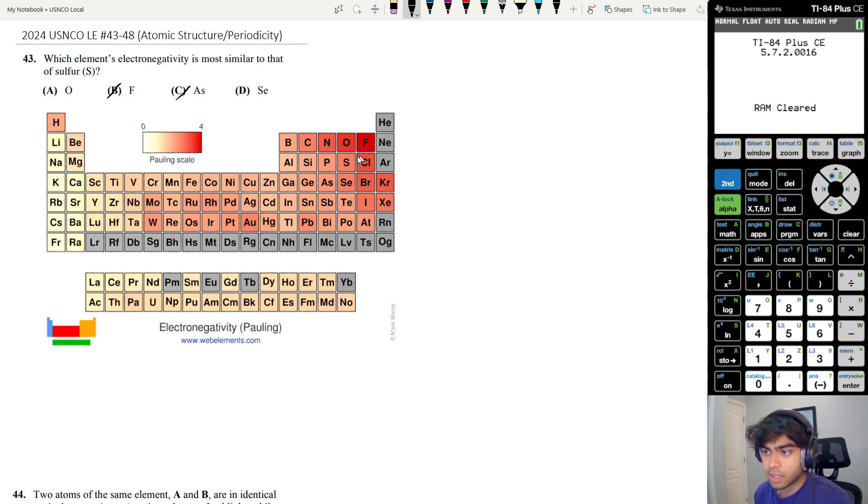Both oxygen and selenium are directly up and down from sulfur, but oxygen, fluorine, chlorine, and nitrogen have exceptionally high electronegativity values. So the difference between oxygen and sulfur is actually pretty high and it's much higher than between sulfur and selenium.